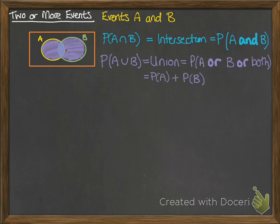And this is equal to the probability of A plus the probability of B, but that would count that middle section twice, so we need to take that away.